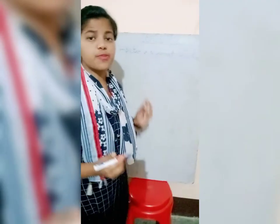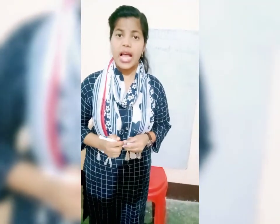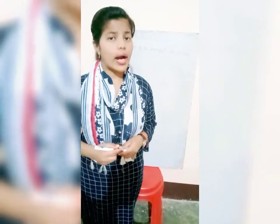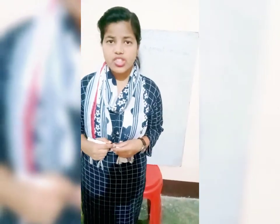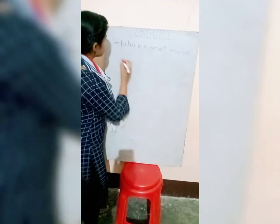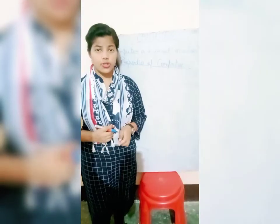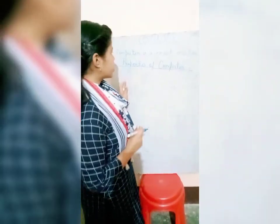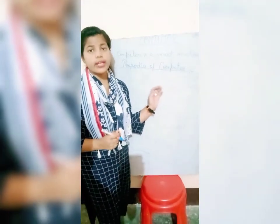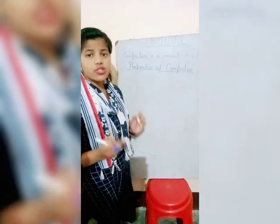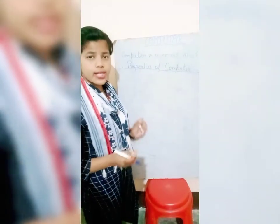Computer is a smart machine because it helps us in many things. So what are the properties of computer? Computer can solve the sums. So the first property is computer can solve the sums.